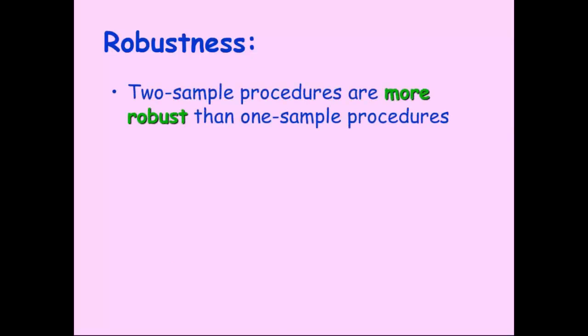All right, let's talk about robustness for a second. In two sample procedures, typically are considered to be more robust than one sample procedures. Robust again means resistance to extreme data or outlier data. So a two sample process would tend to give you a more representative p-value than say a one sample process would.